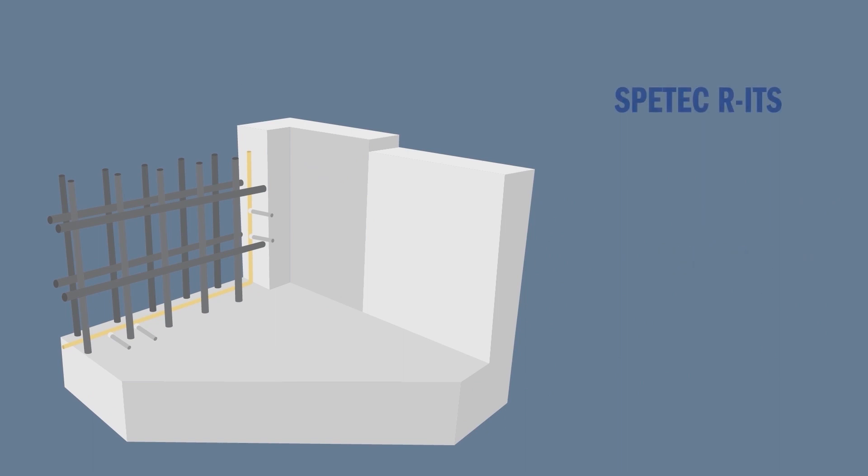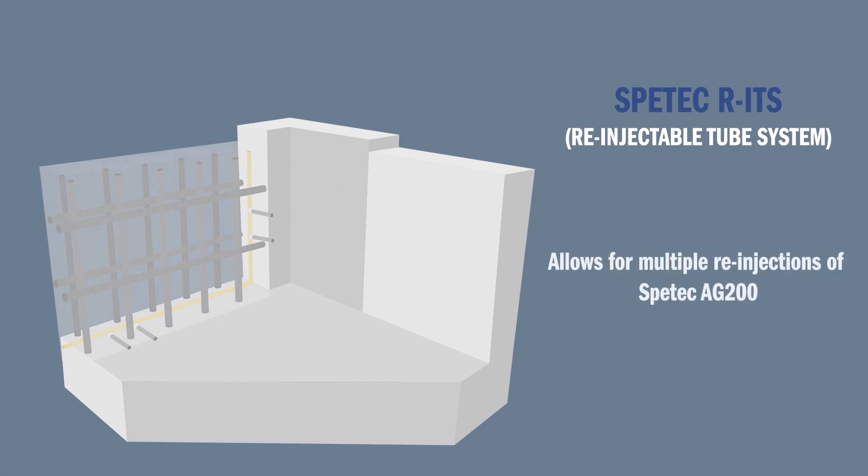Alchemy SpeedTech's RITS or Re-Injectable Tube System functions in a similar way, except that it allows for multiple re-injections of Alchemy SpeedTech AG200 should the structure shift and a leak reappear.